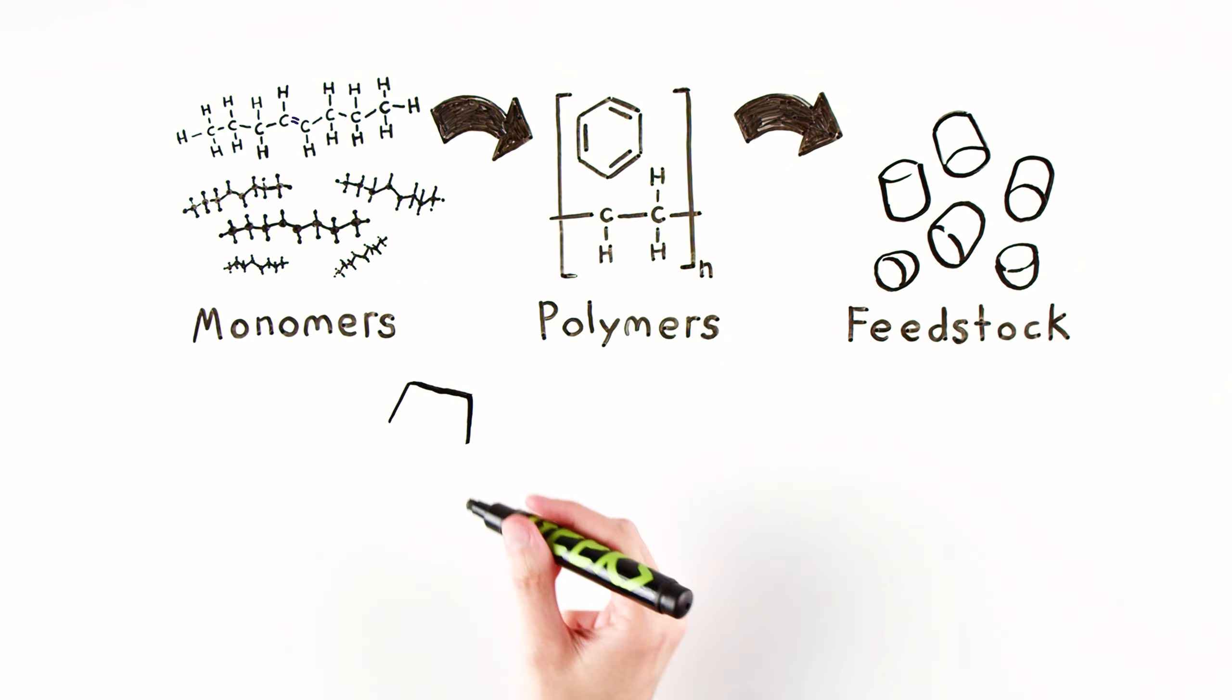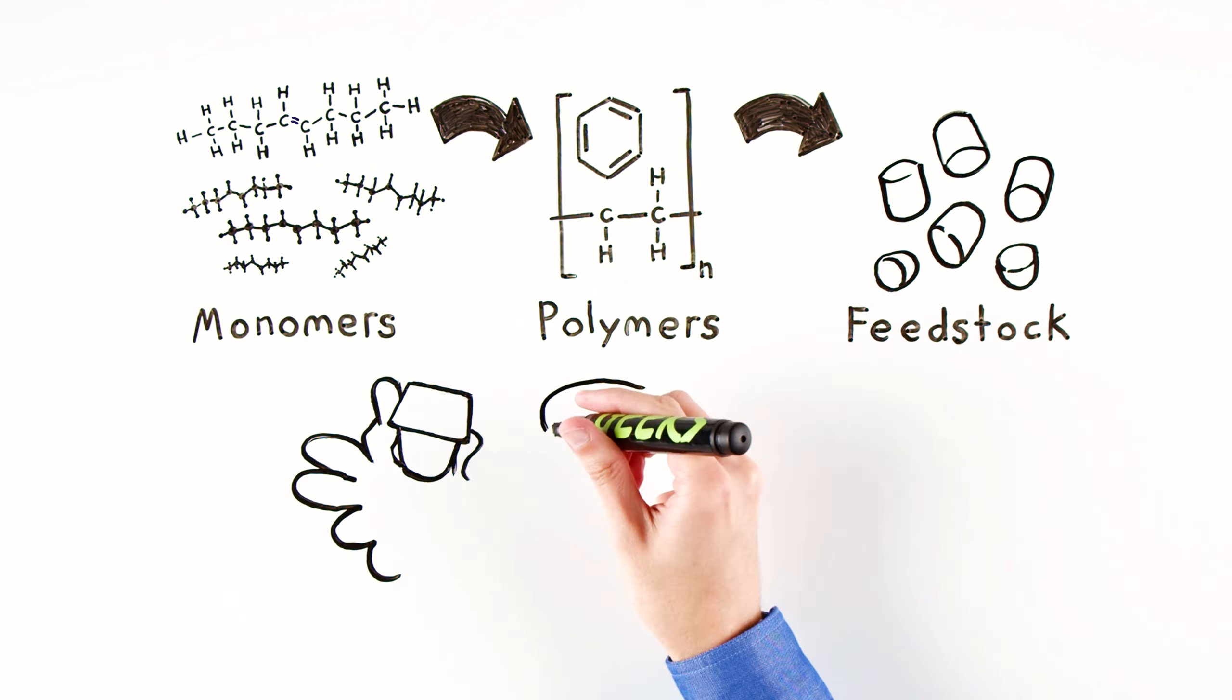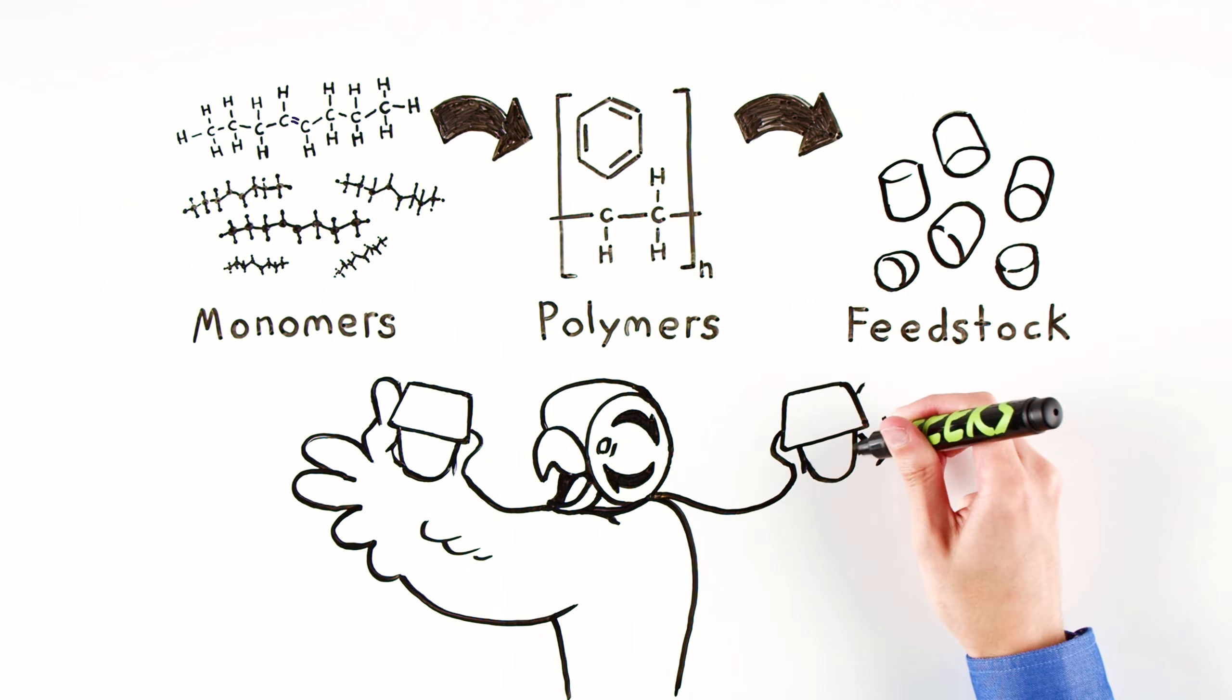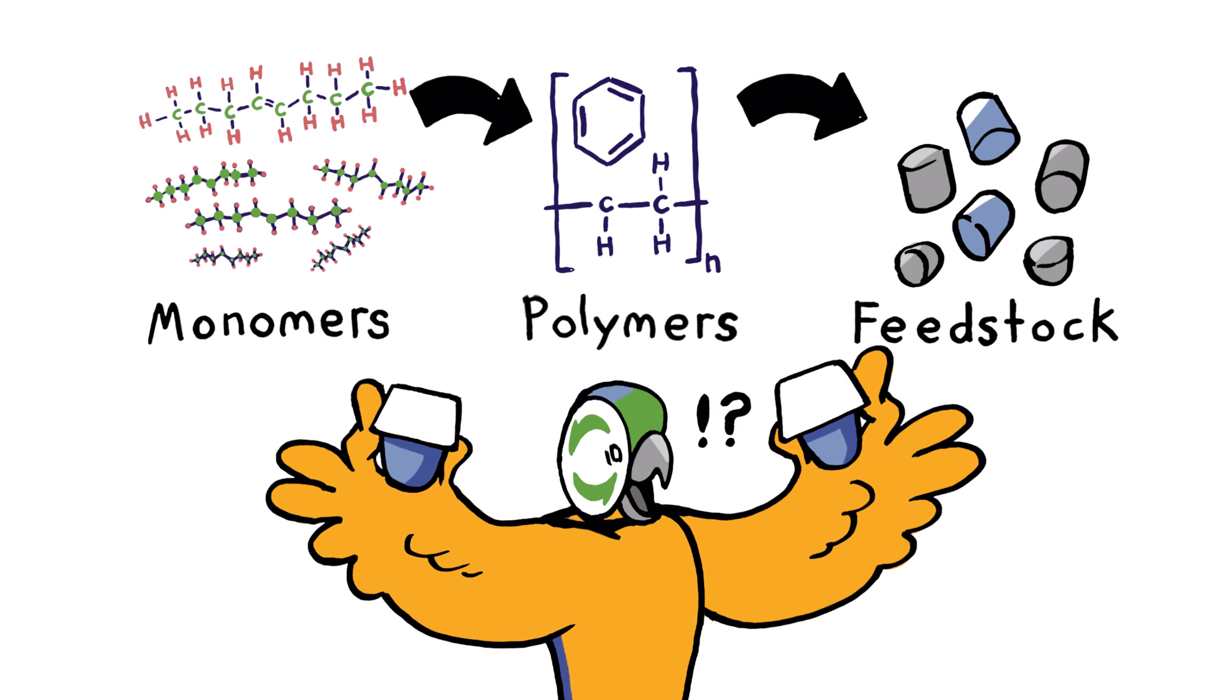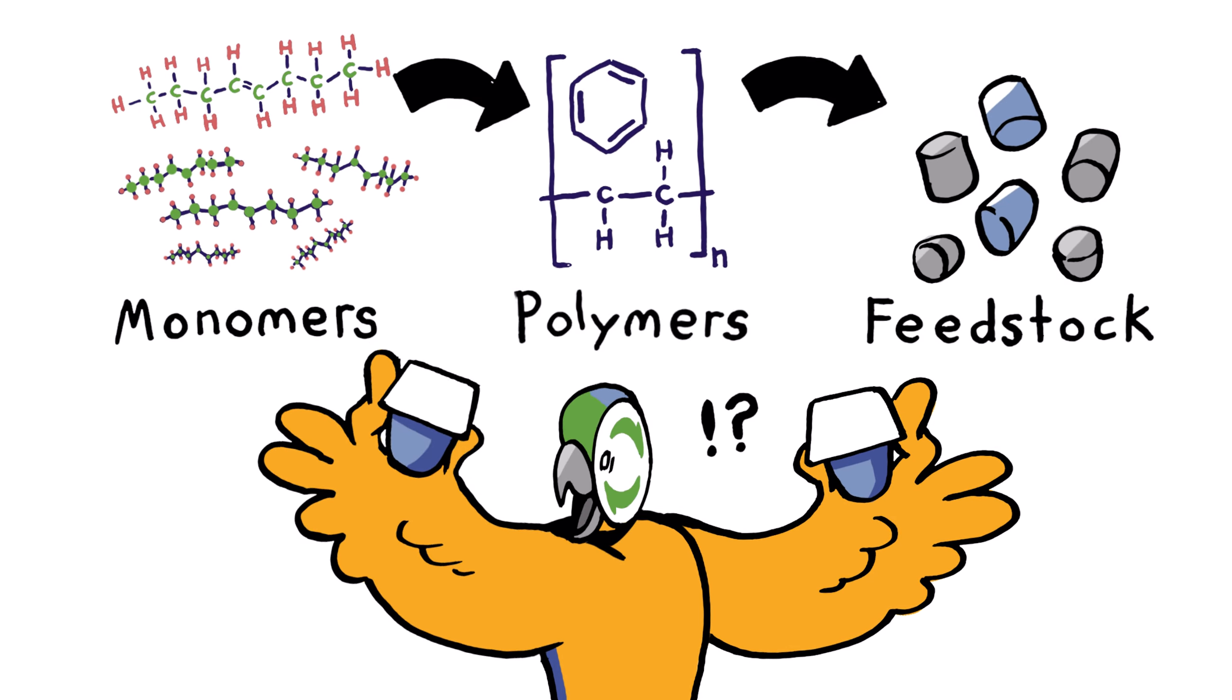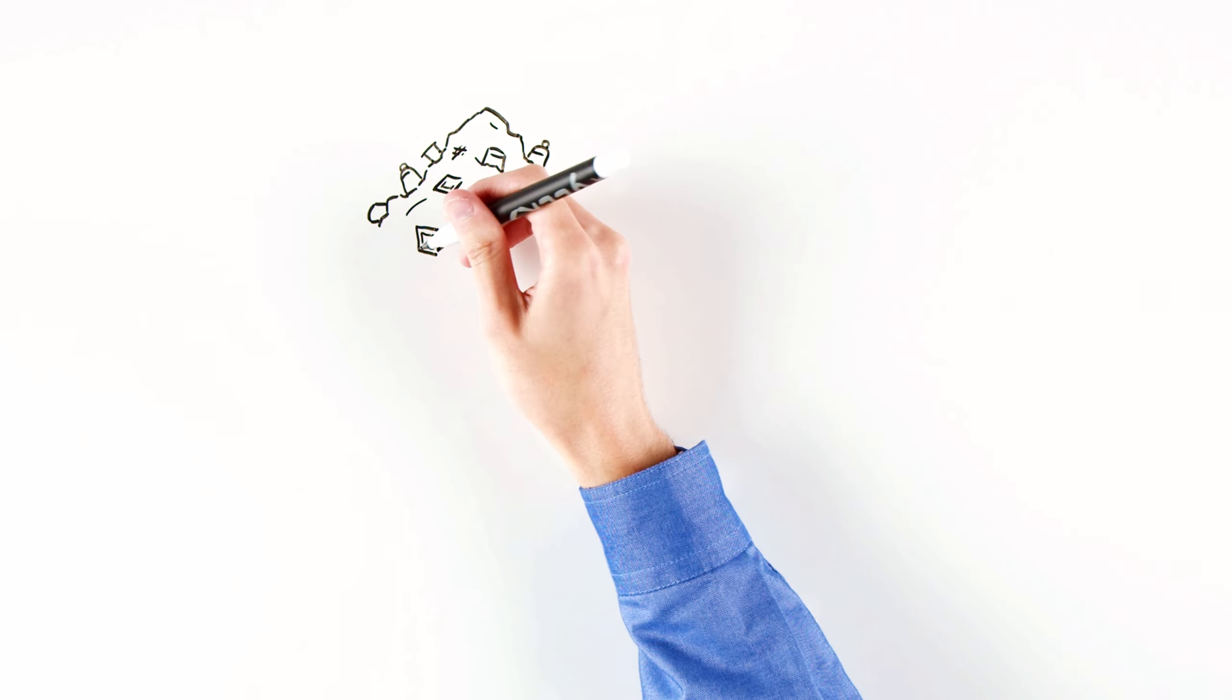This creates our new feedstock and polymer-to-polymer recycling. The pyrolysis process allows the final products to have exactly the same properties as conventional fossil-based materials, including meeting food-grade quality. Bonus!